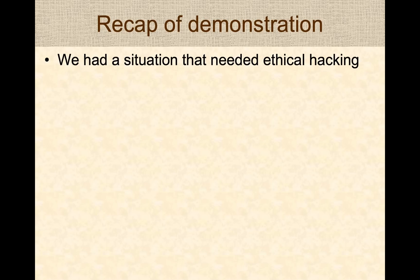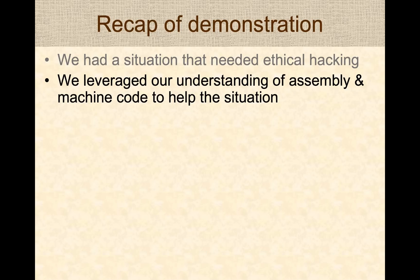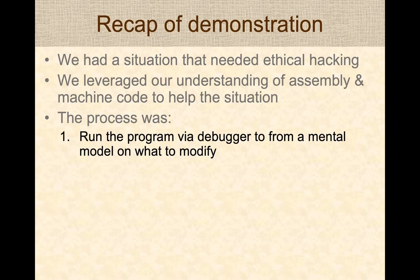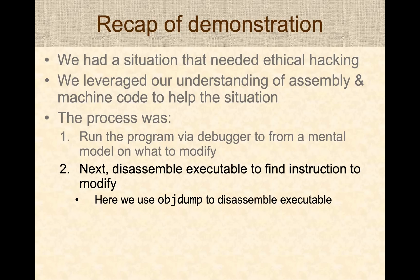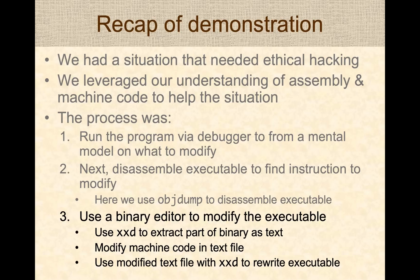Let's do a quick recap. We had a situation that required ethical hacking on an executable, and we leveraged our understanding of number representations, assembly, and machine code to address it. The process: first, run the program via debugger to form a mental model of what area to modify. Then disassemble the executable and zoom in on the instructions to modify. Then use a binary editor — extract the instructions as text, make the modifications, and update the executable using the modified text file.